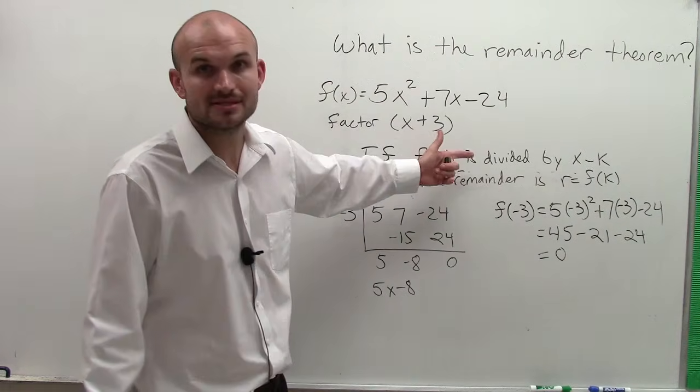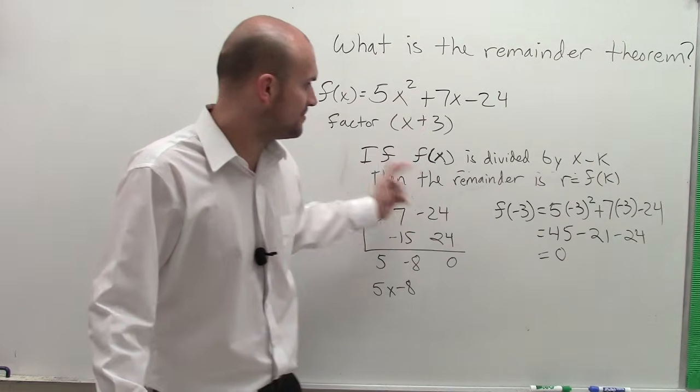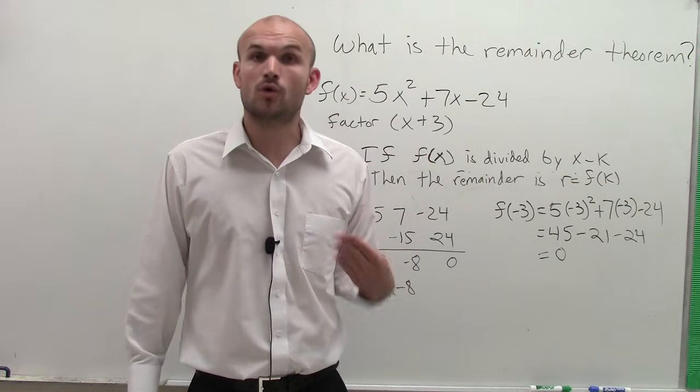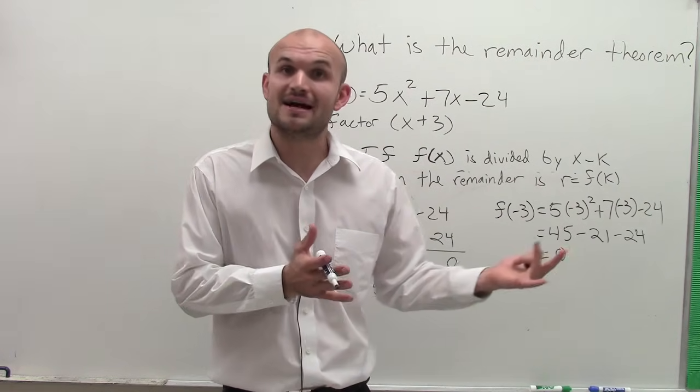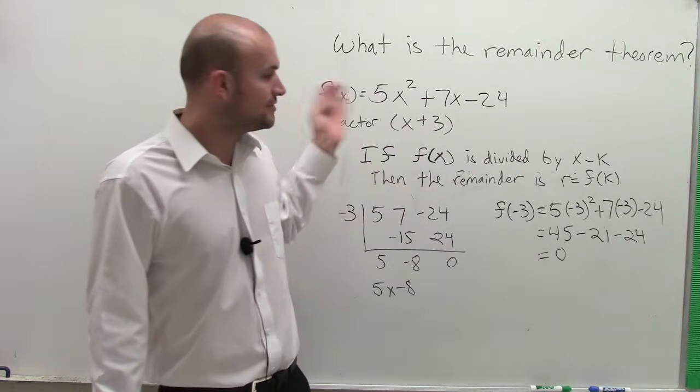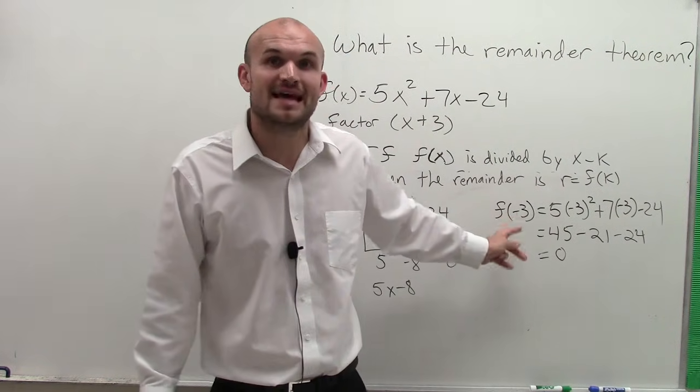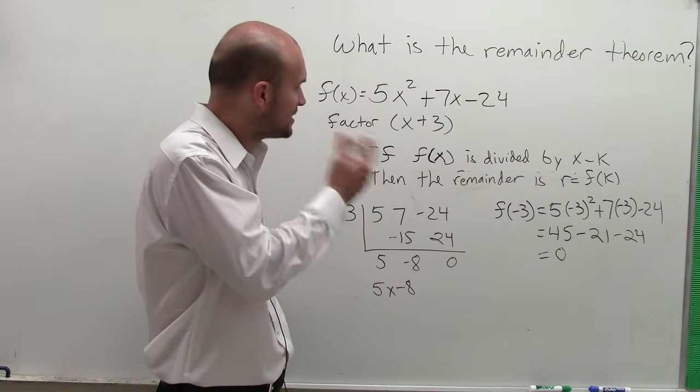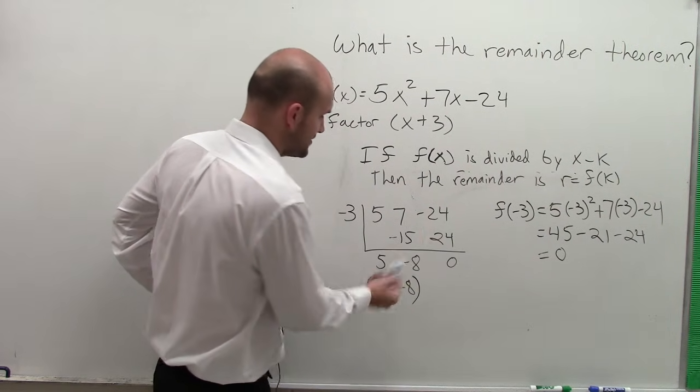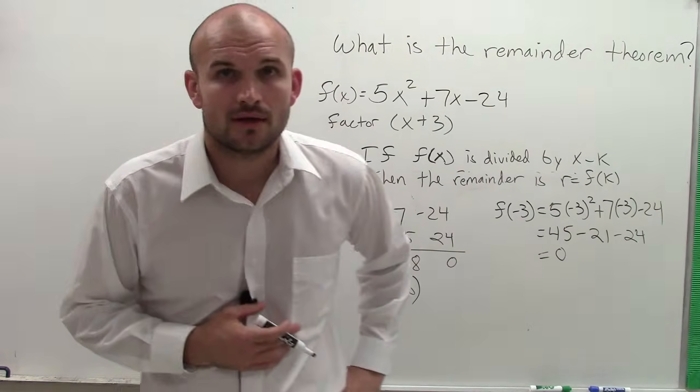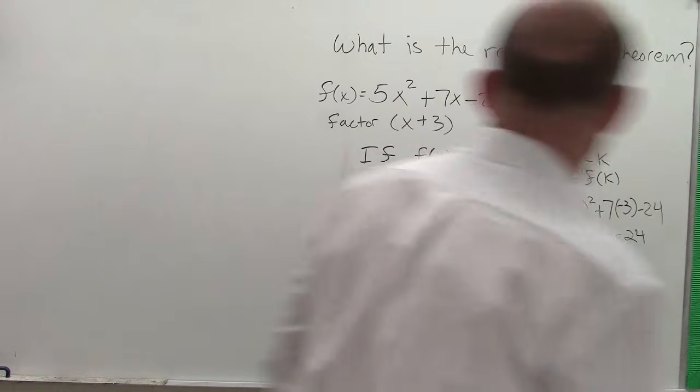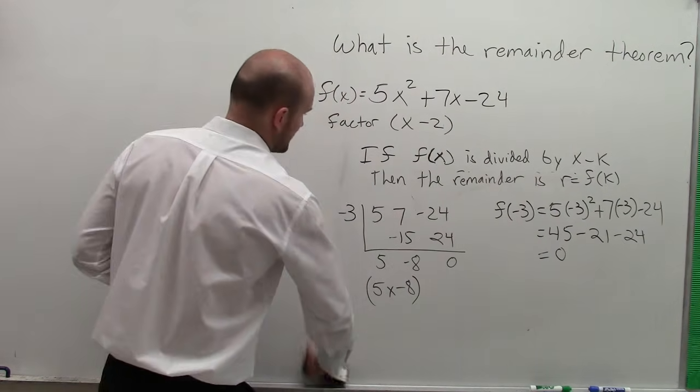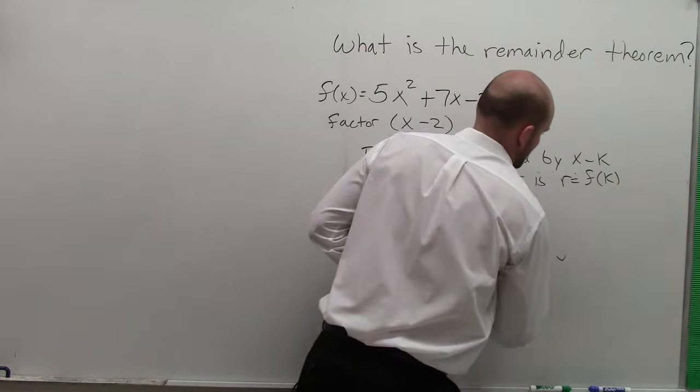So this evenly divides into it because the remainder is 0. So why is that so important? Well, if you wanted to know if a zero works, or if a factor evenly divides into a polynomial, rather than always having to divide, you can also check your answer by evaluating that zero by plugging it into the function. So let's take a look. Let's say I also wanted to, well, we actually already know what the other factor is, 5x minus 8. But let's try one more example and see if that works. Let me get my eraser here. Let's pretend that I want to see x minus 2. Let's see if that works.